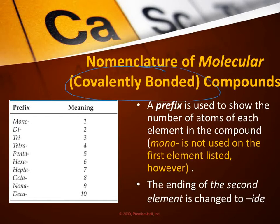Now we're going to talk about naming covalent compounds. We save them to last because they're quite a bit easier. Remember that if a compound is covalently bonded, we call it a molecule instead of a formula unit.